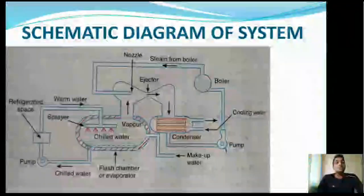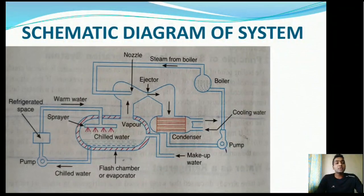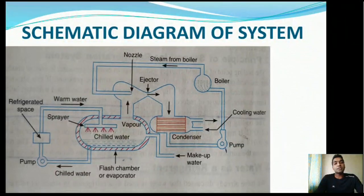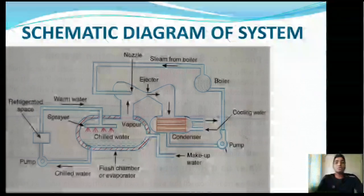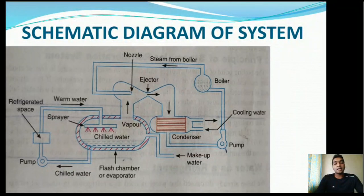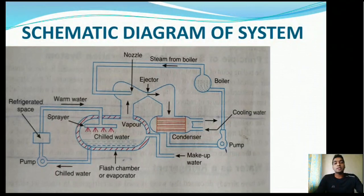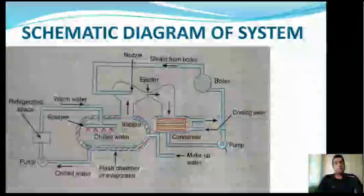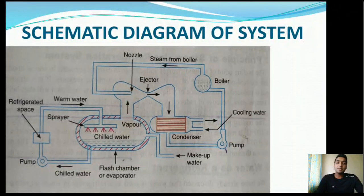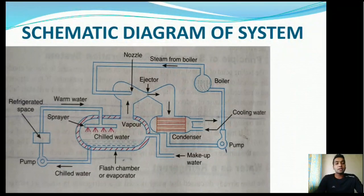Steam is sent from the boiler to the steam nozzle inside the ejector, where it expands to produce low-pressure, high-velocity steam at the nozzle exit. Due to this low pressure, water vapor is extracted from the flash chamber. At the throat of the ejector, the mixture of high-velocity steam and low-pressure water vapor undergoes compression, increasing its temperature and pressure. This mixture is then sent to the condenser.